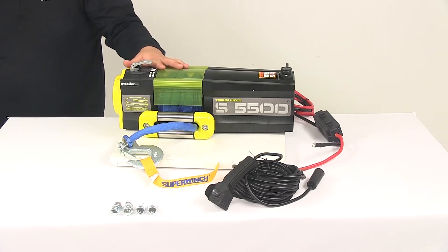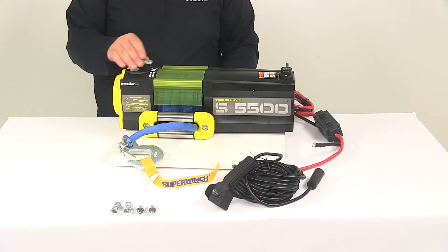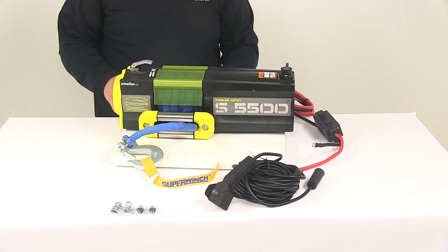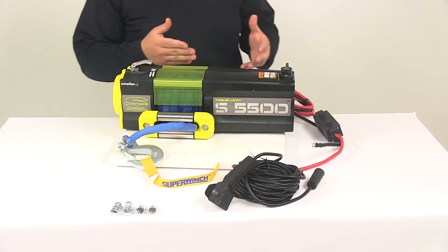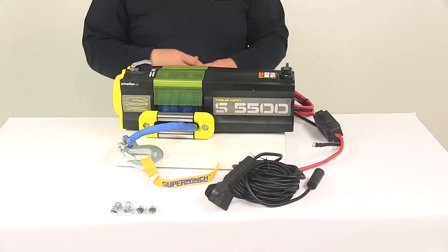The unit features a free spooling clutch activated by the innovative kickflip aluminum lever, easily accessible right here on the top of the winch. Right now it's in the engaged position, so we would be able to get this fully connected to the battery, connect the included remote control, and extend the line out or bring it in.